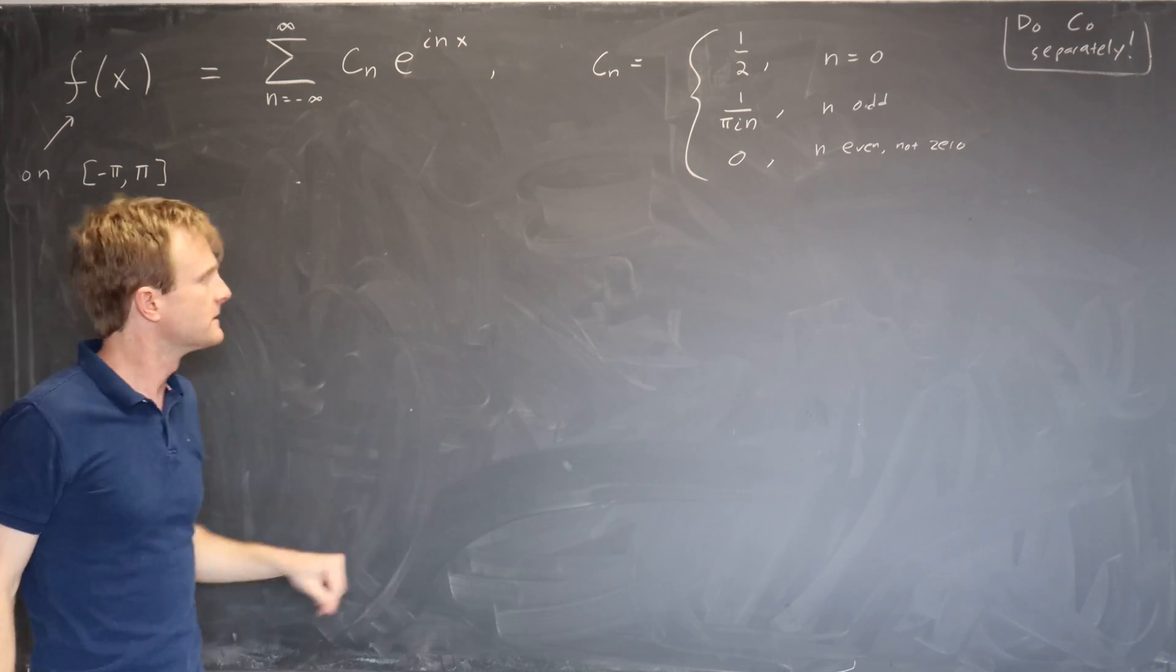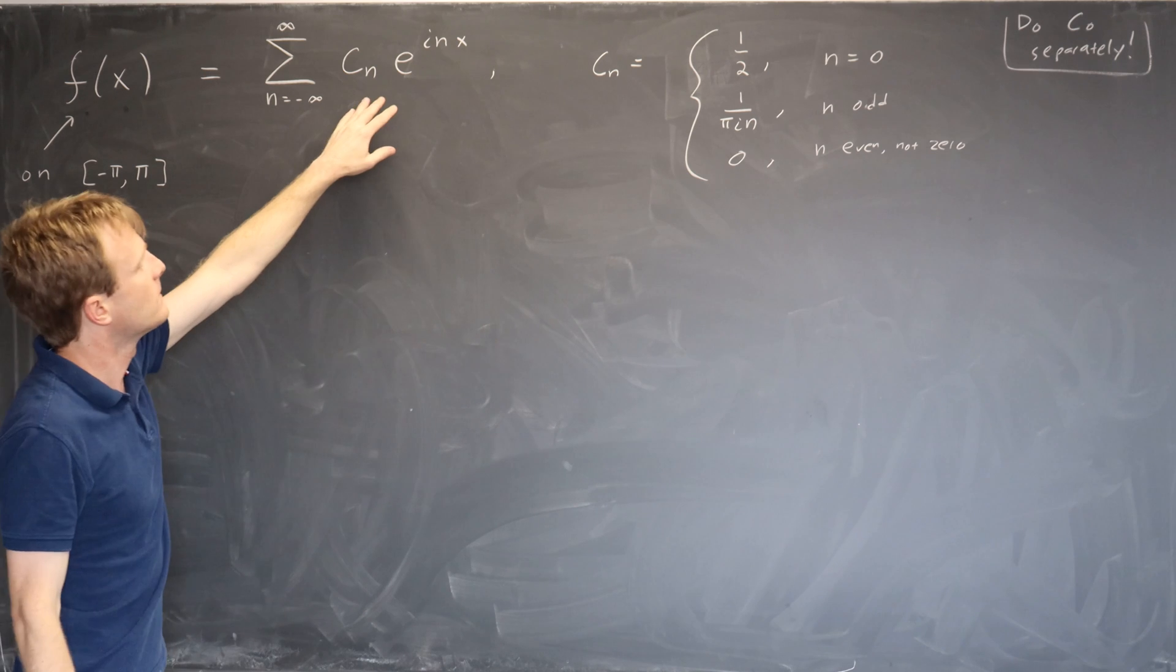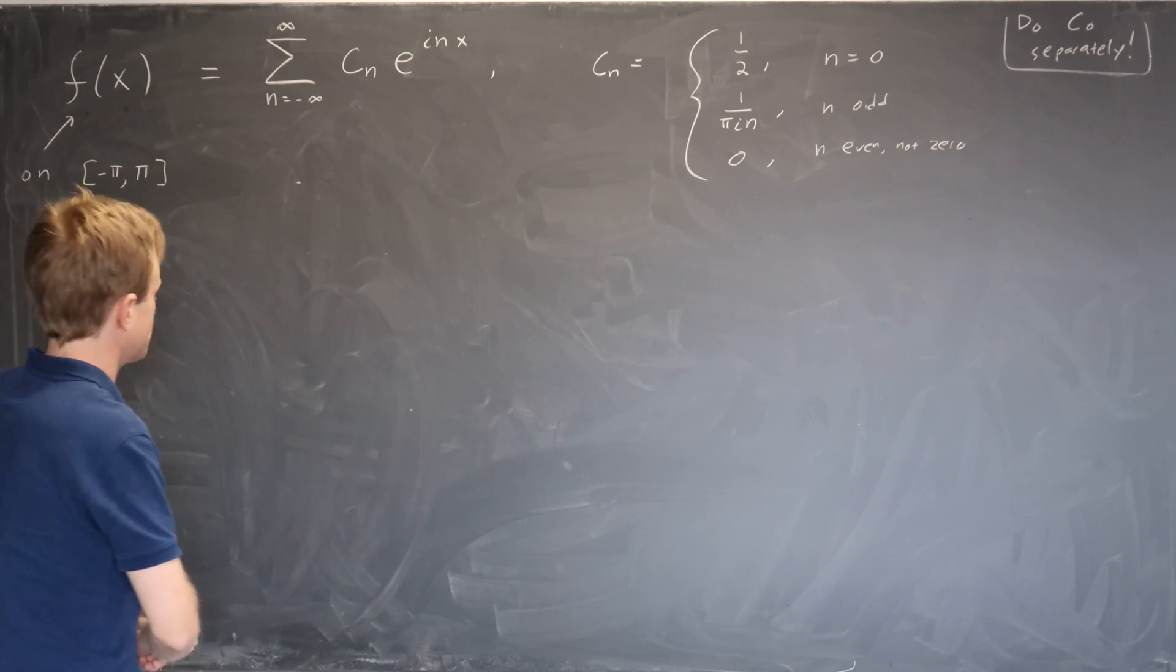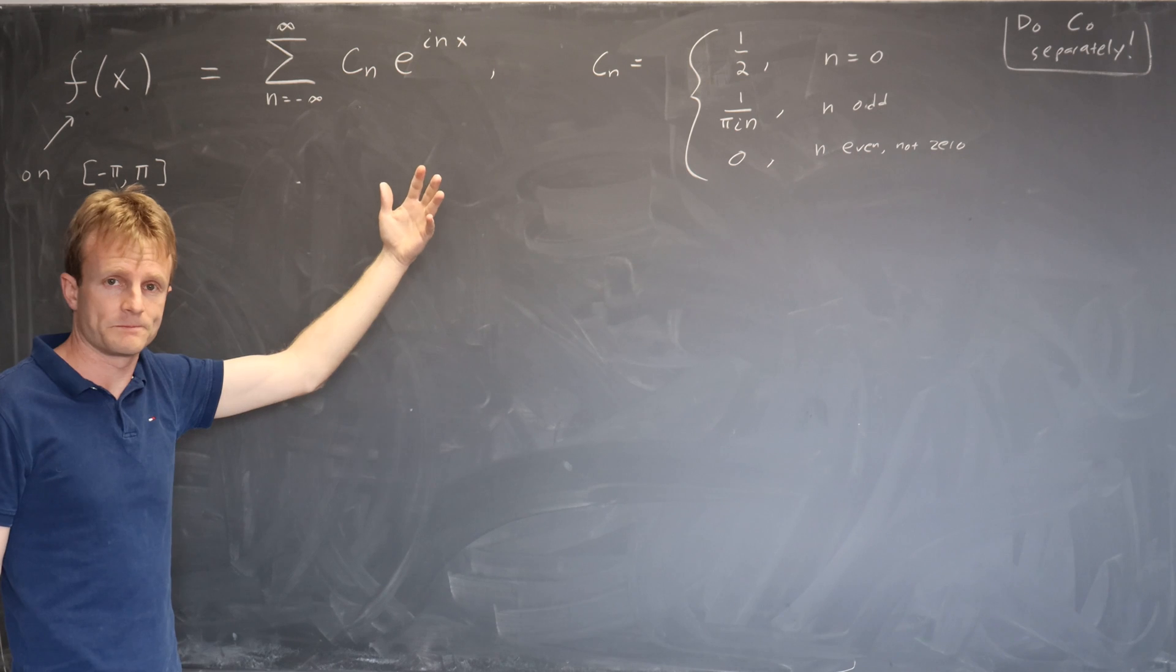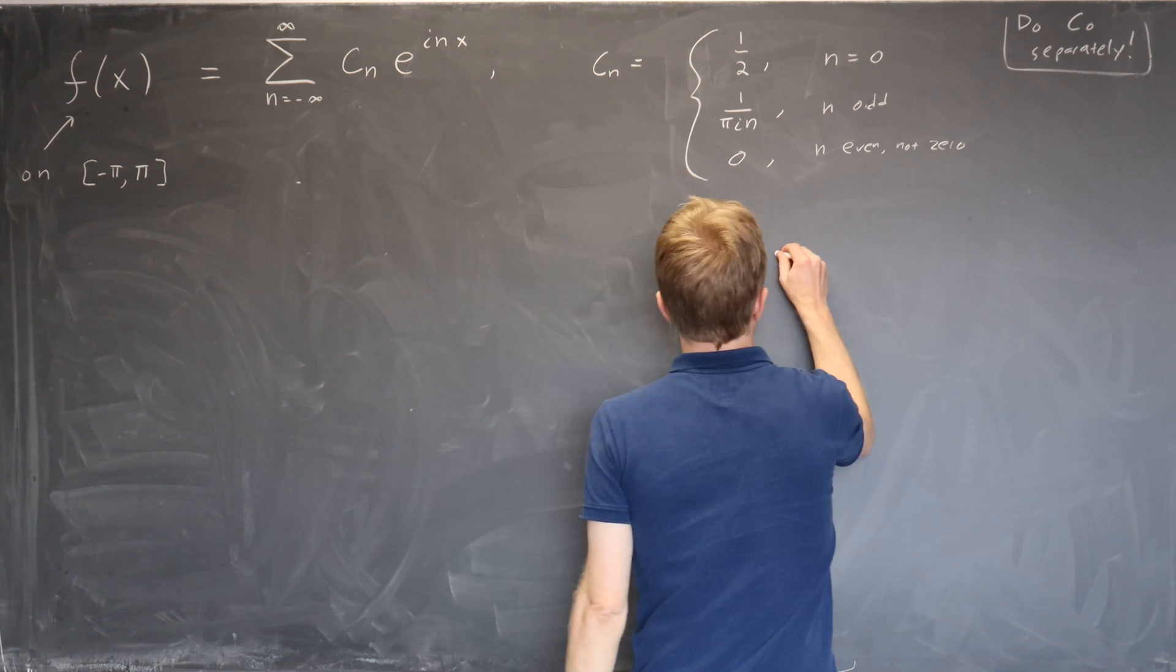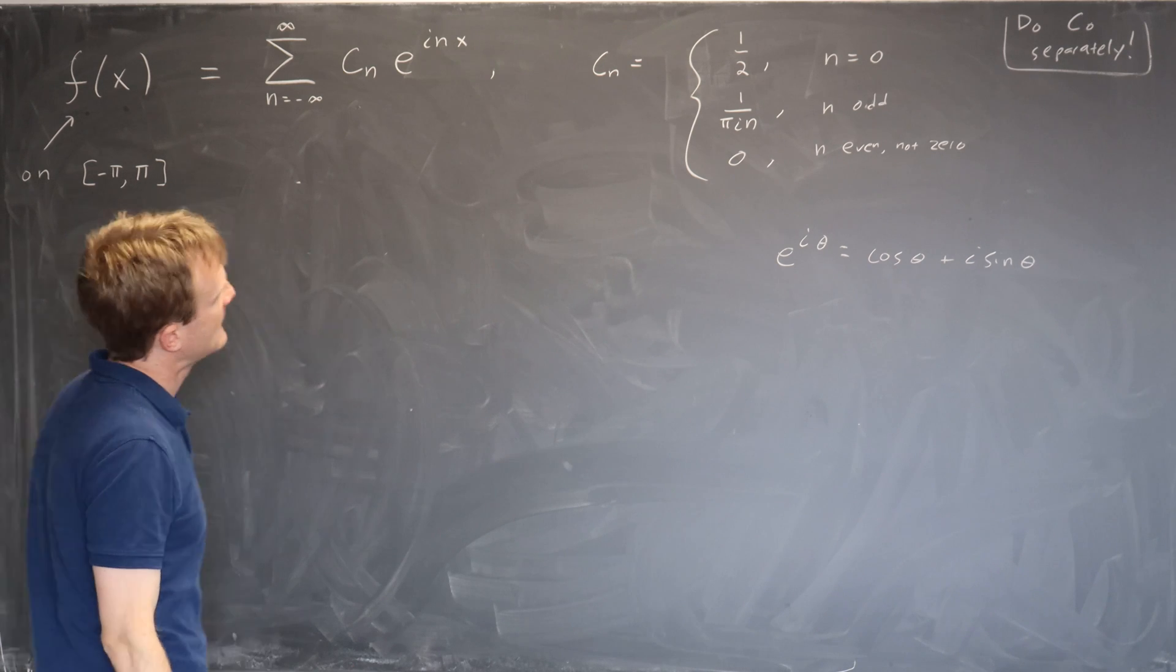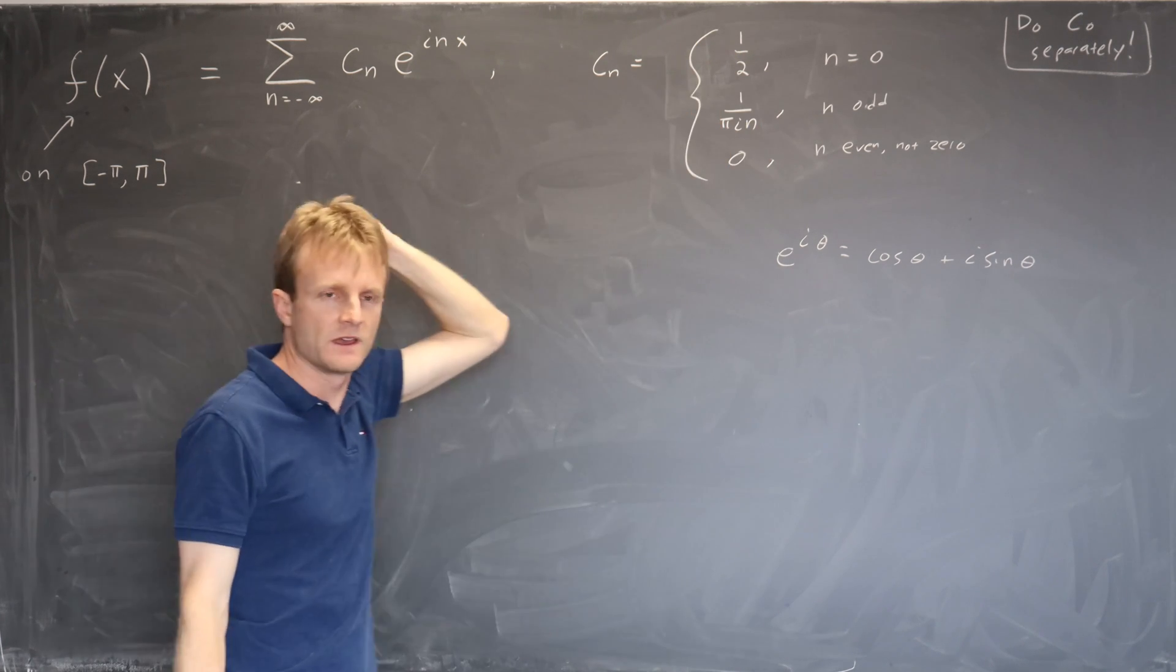But in this class we're mainly expanding real functions f. And so it's a little funny to have a real function f on the left hand side written as a big sum involving a bunch of complex numbers c_n times a bunch of complex functions e to the inx. So what we would like to be able to do is write the right hand side in a manifestly real form using sines and cosines.